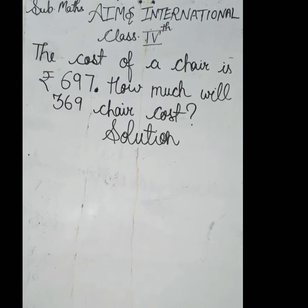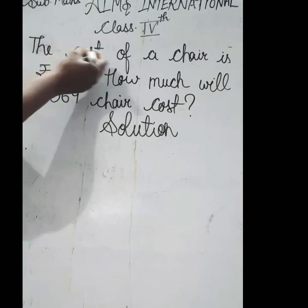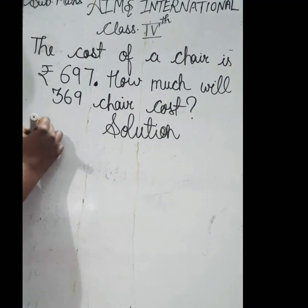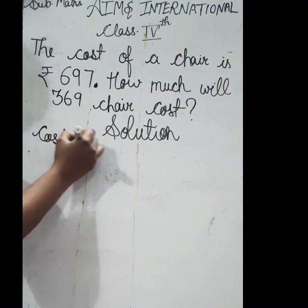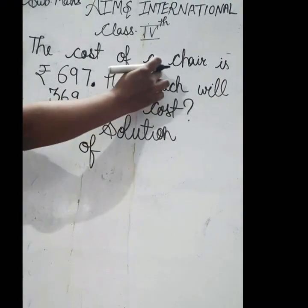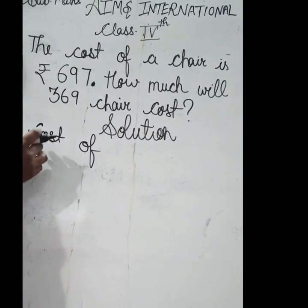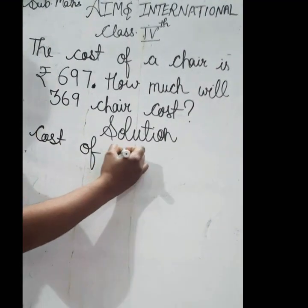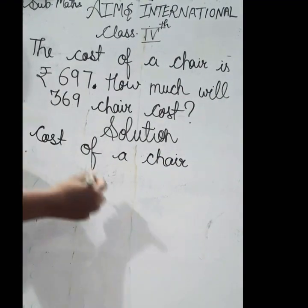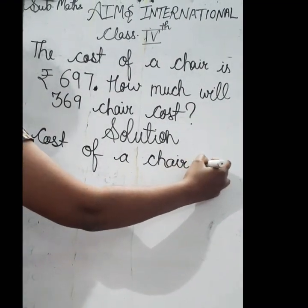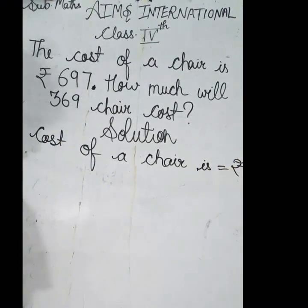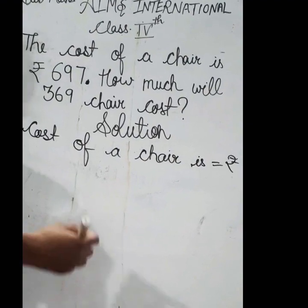Now firstly, you will write this statement. जब आपको cost पूछा जाएगा, तो आप वहाँ पर directly लिखेंगे 'cost of'। कितने chairs का cost बताया गया है? 'A' का मतलब होता है one, तो आप लिखेंगे cost of a chair। एक chair का cost कितना है? Rs. 697।